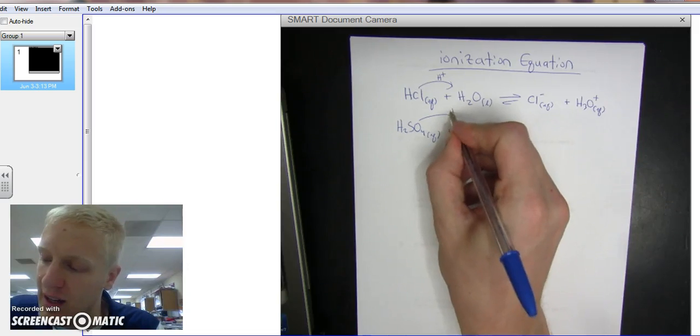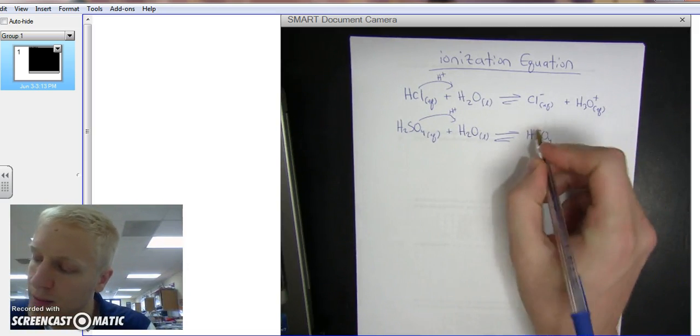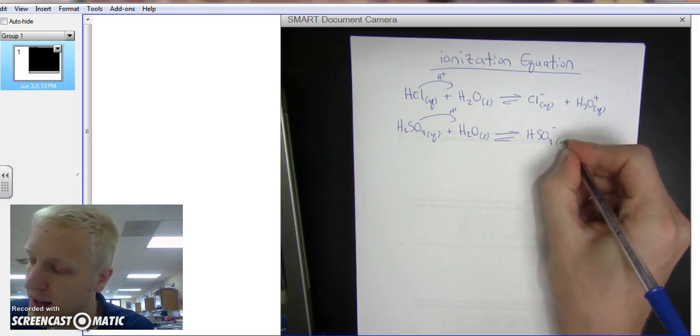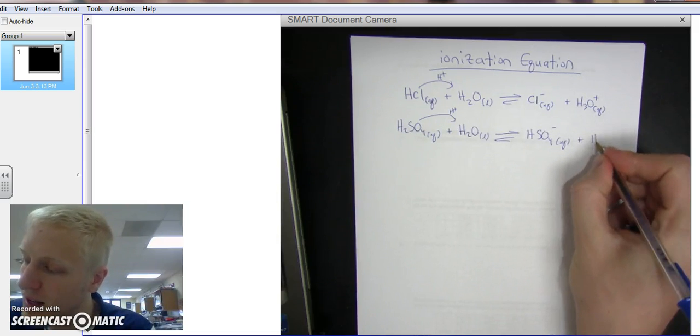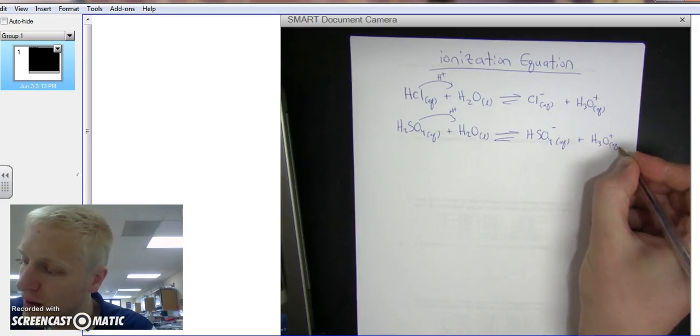Alright, so the acid again gives an H+, so it's going to form HSO4, but it lost a positive, so now it's minus charge, it's aqueous, plus H2O gained an H, so now it's H3O+, also aqueous.